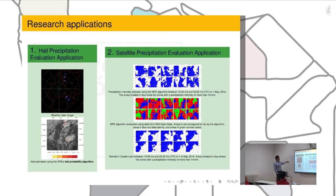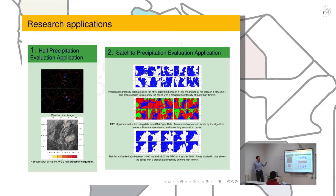For example, the group has developed an application which allows to predict, with a couple of hours, when it's going to hail. That's very important, for example, for agriculture.